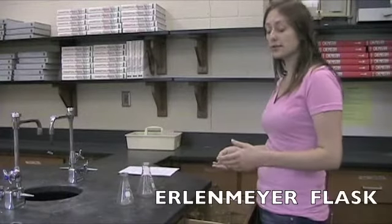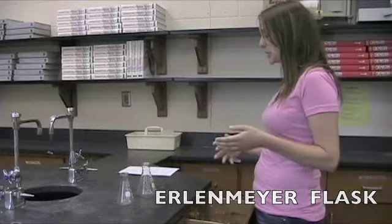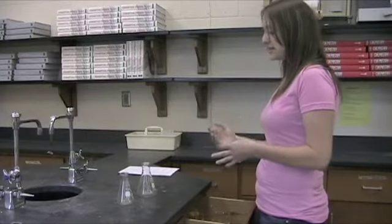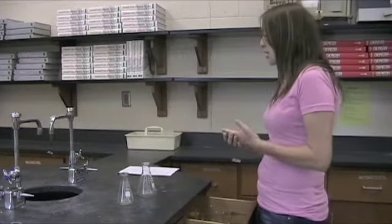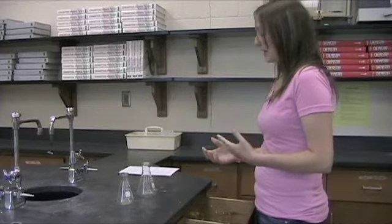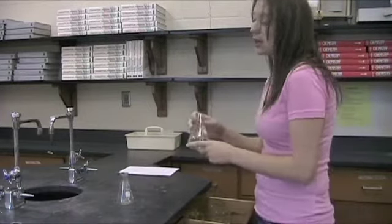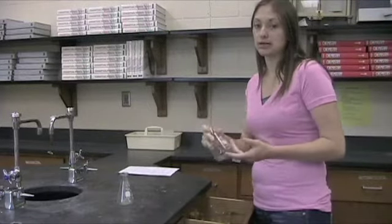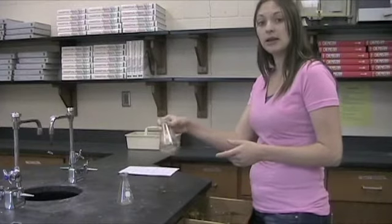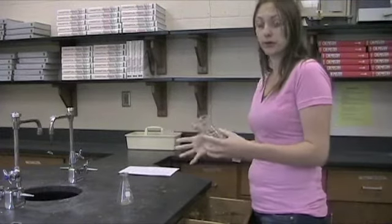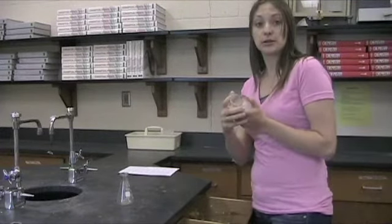Next we have Erlenmeyer flasks. Erlenmeyer flasks are very similar to beakers. They have many different sizes. You're going to have two in your drawer. They are not very exact in their volume measurements. They're very similar to beakers in that way. What they're really good for is if I want to put a liquid in here and I want to swirl it or shake it or mix it, it's very easy to do that by hand and it's not going to swash all over the place because they have much skinnier necks.